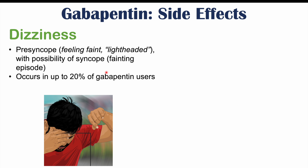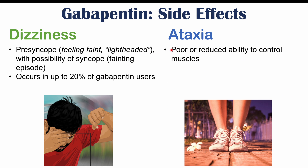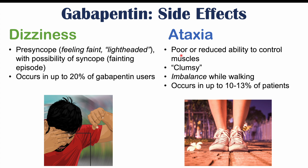Ataxia — poor or reduced ability to control muscles, essentially being clumsy — can also occur. This is often mild and may involve imbalance while walking, occurring in 10 to 13% of patients.